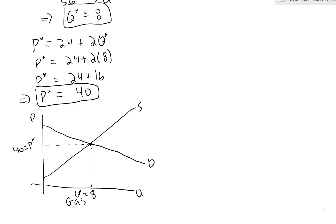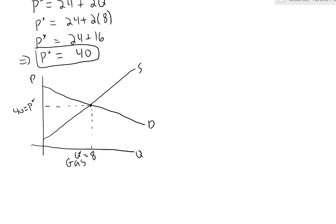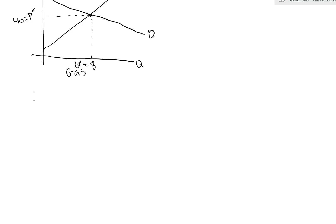Now for part 2, with a 14 cent excise tax on gasoline. Rewriting our equations: PB equals 80 minus 5QD for the demand curve, and PS equals 24 plus 2QS for the supply curve. Here PB is the price buyers pay and PS is the price sellers receive. We need to solve for equilibrium quantity as well as both prices.